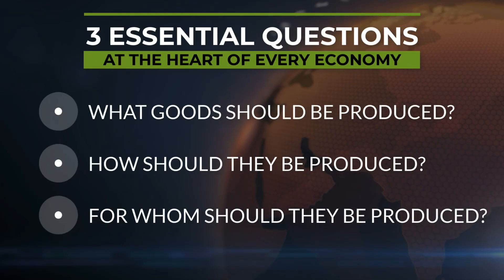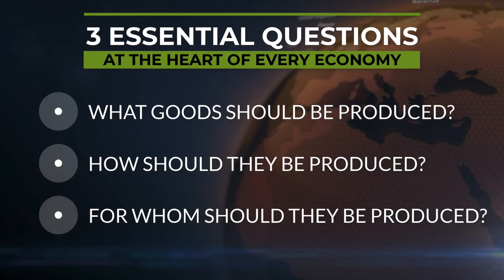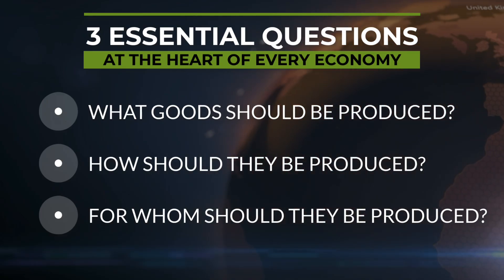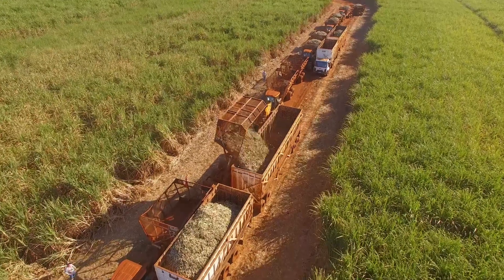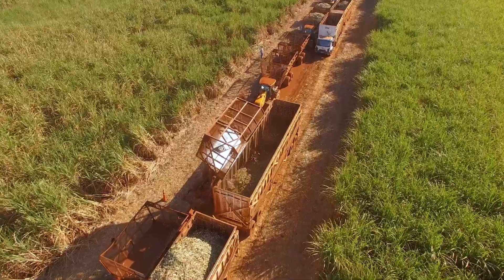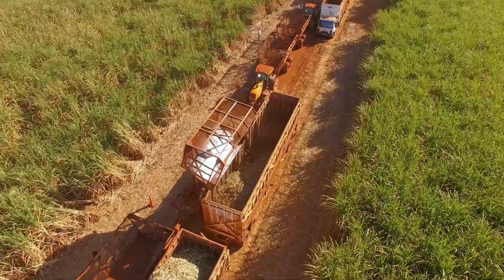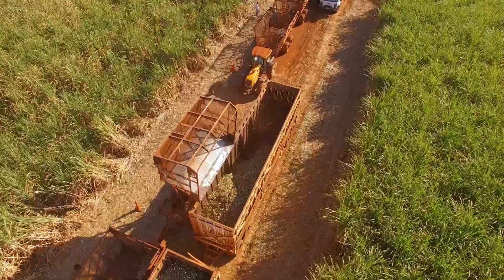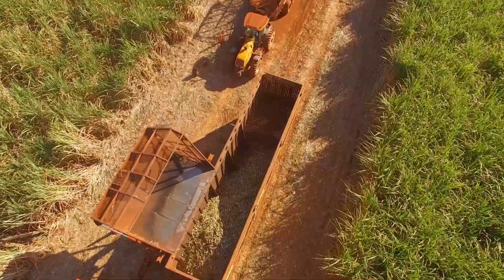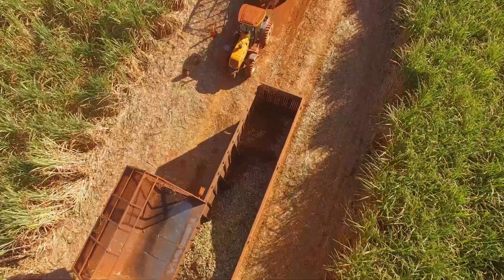What goods and services should be produced? How should they be produced? And for whom should they be produced? The way a country answers these three questions depends on its values, like efficiency, equality, freedom, and security, and determines which type of economic system it uses.